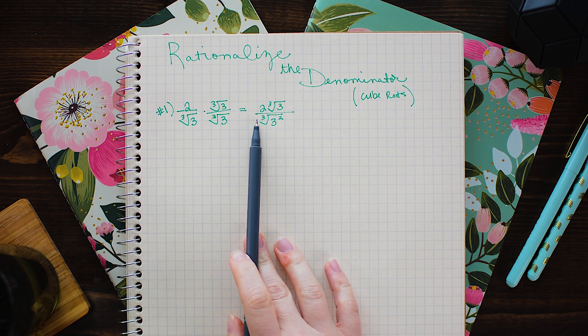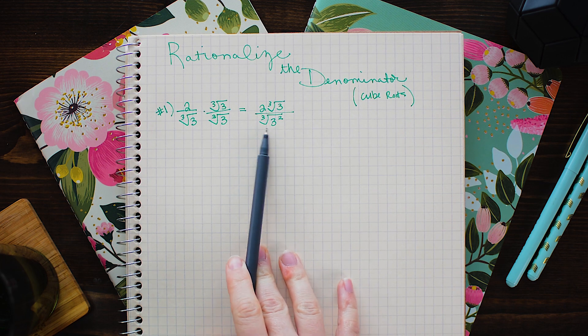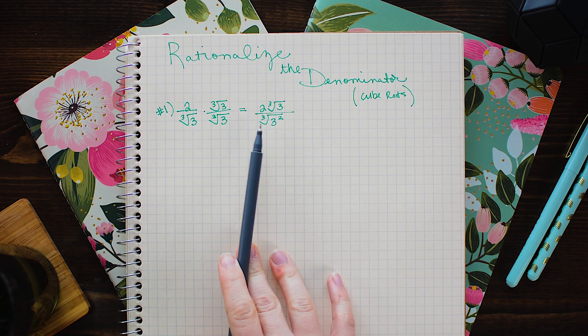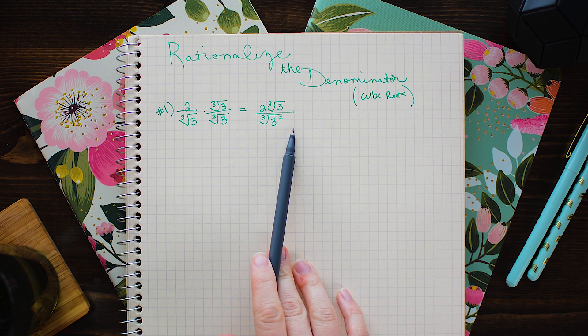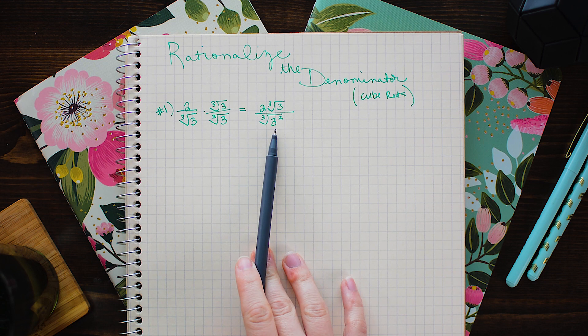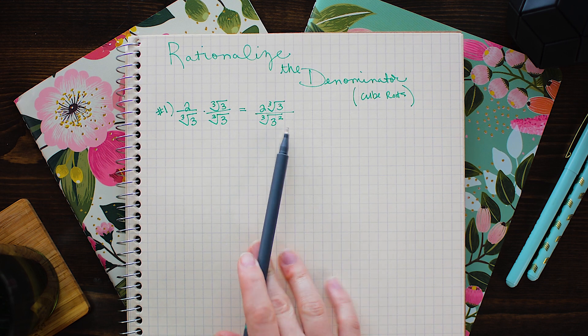In this step normally if it were a square root this would simplify down to a whole number but of course the cube root of 3 squared or the cube root of 9 cannot be reduced. So that's why this doesn't work. We need this to be 3 cubed in order to take the cube root of it.